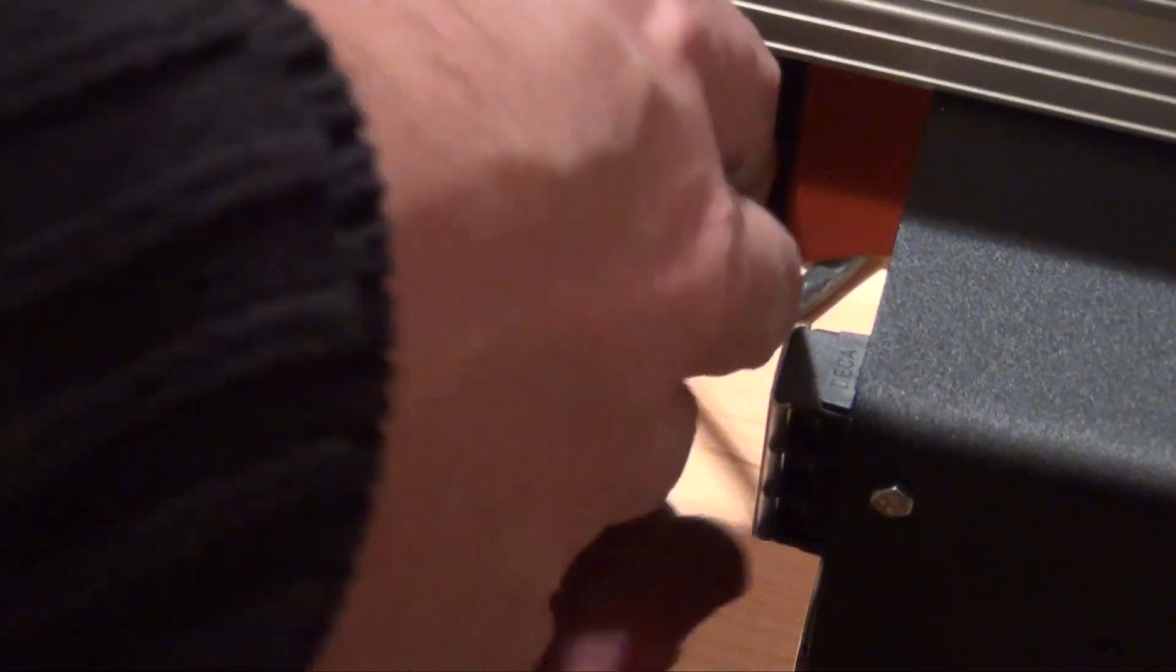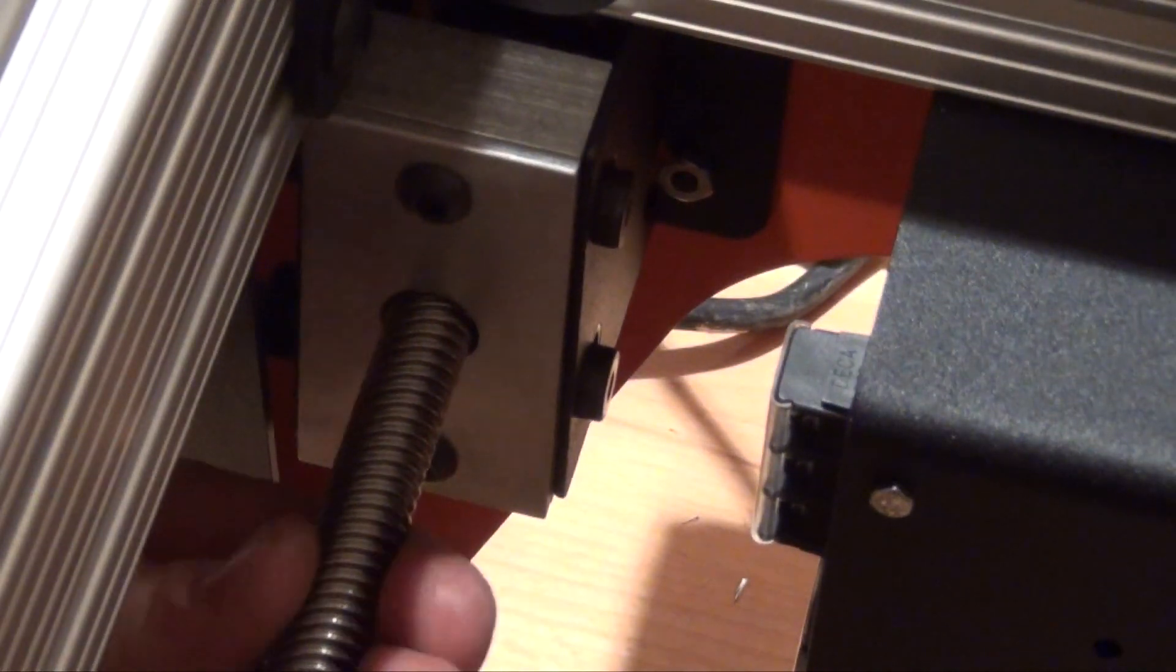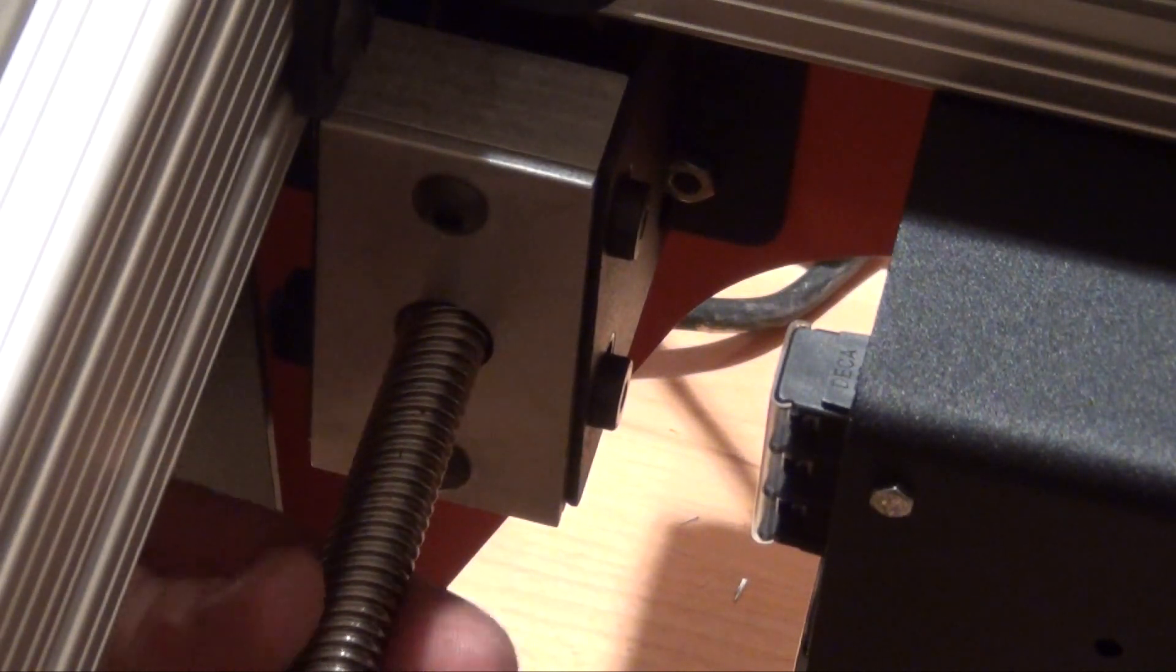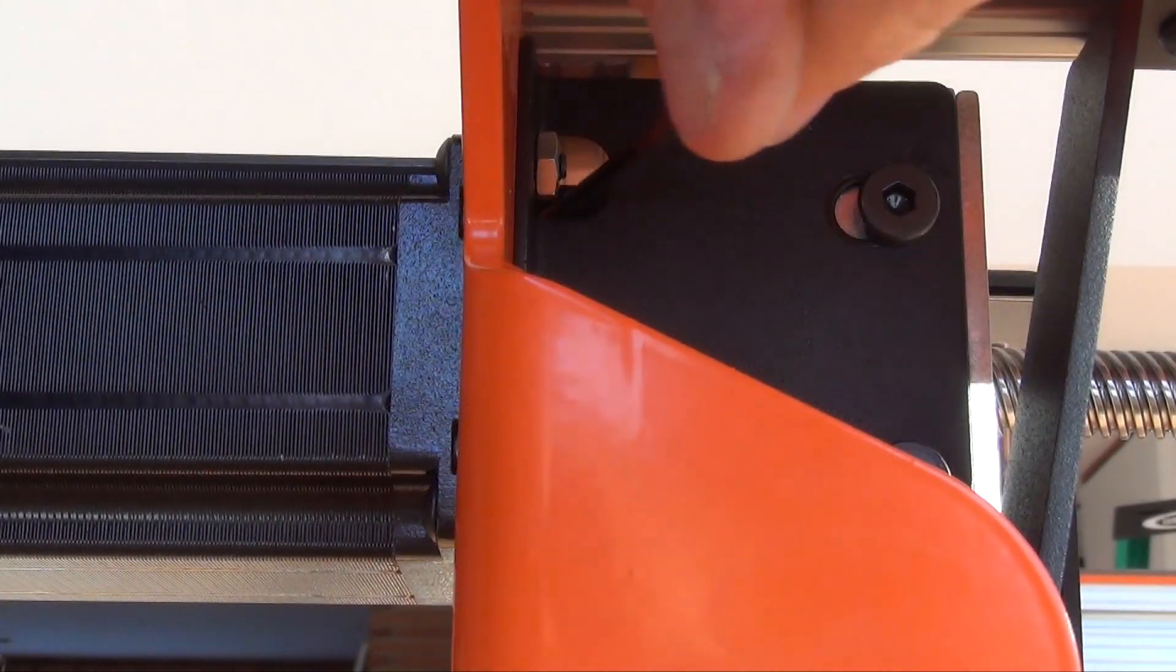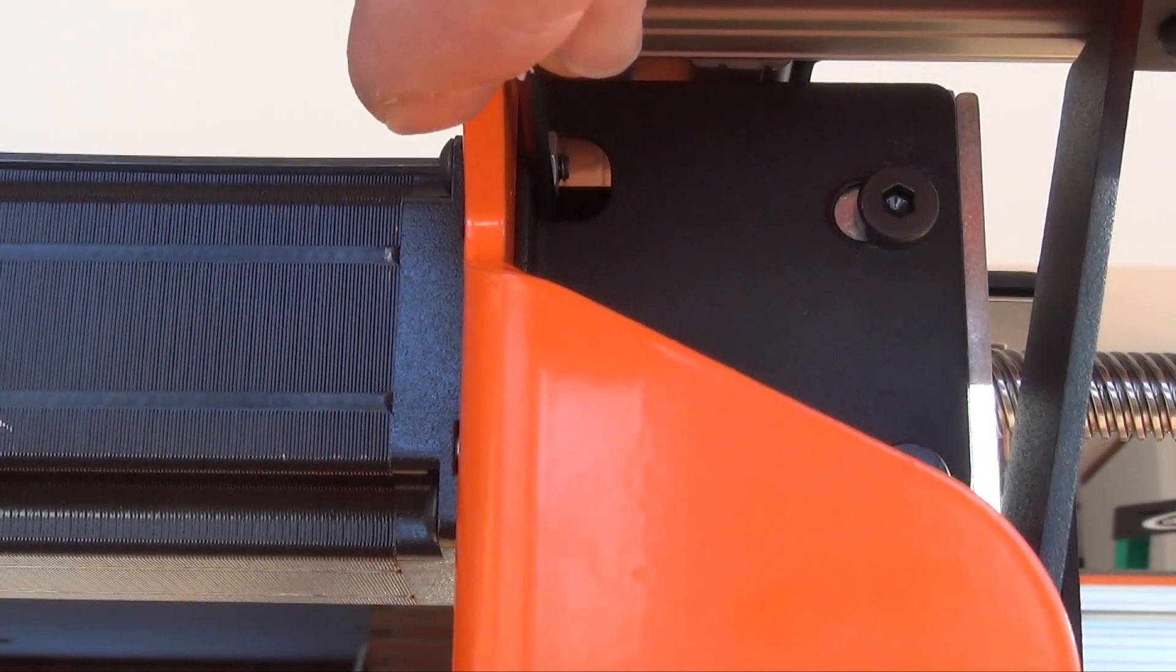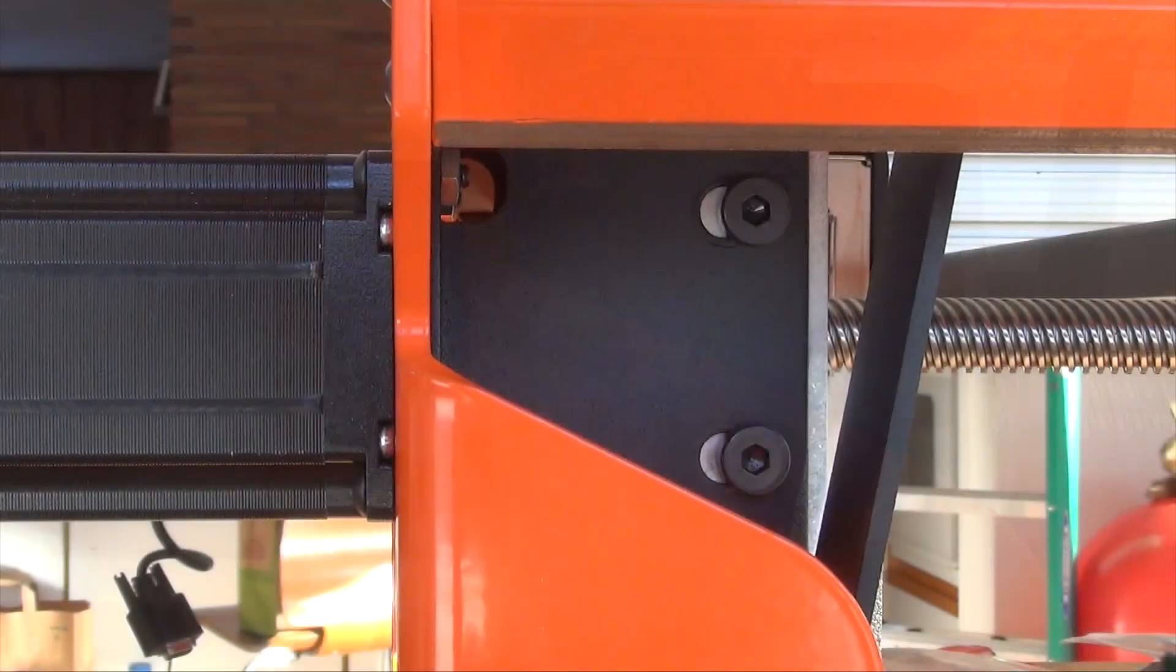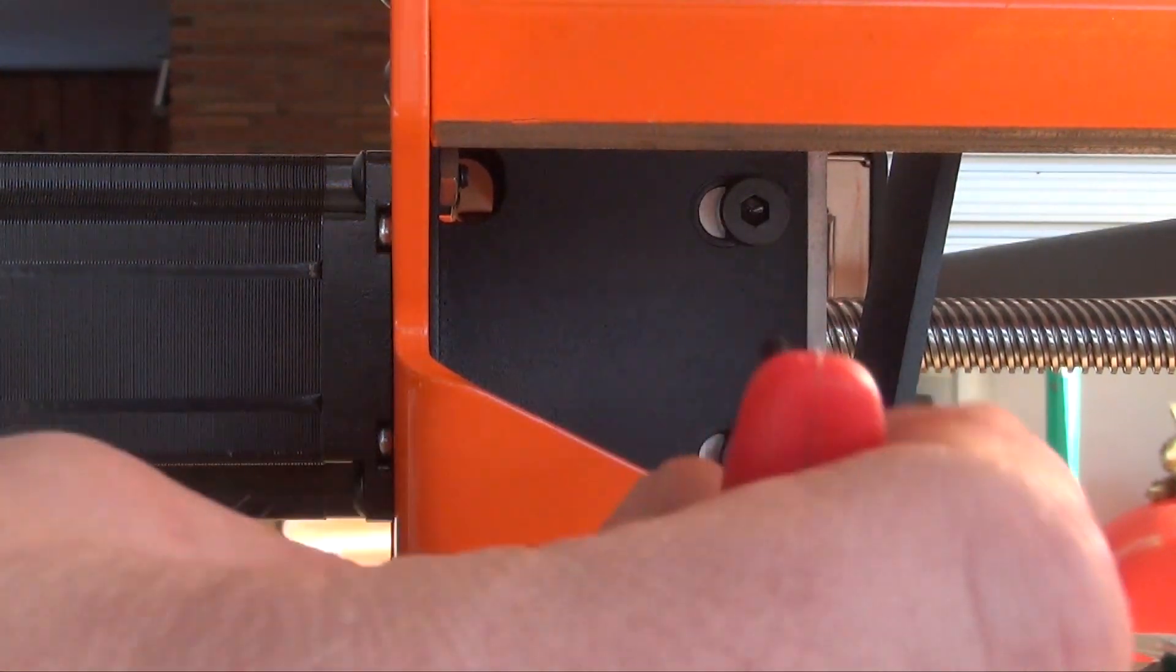Here you'll see how the coupler is self-centering. Tighten the fasteners holding the motor and motor mount. Then tighten the bearing blocks.